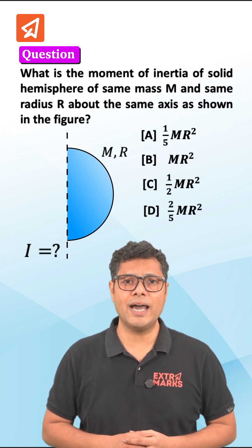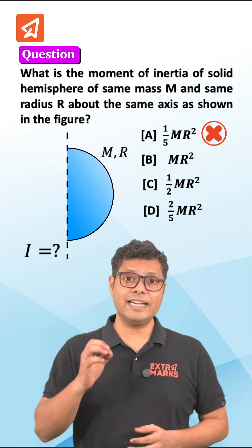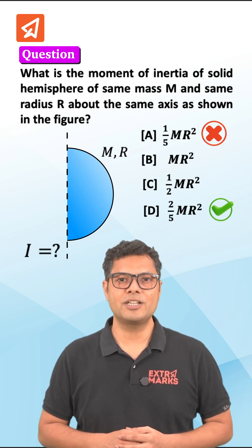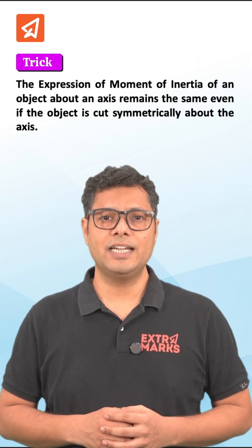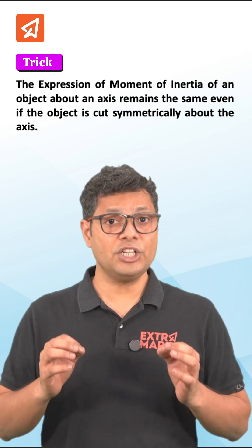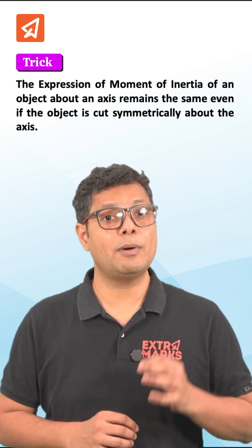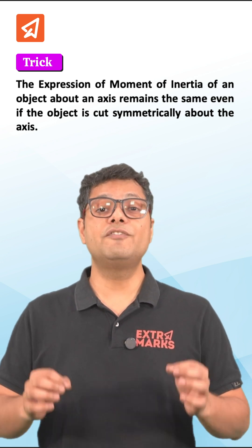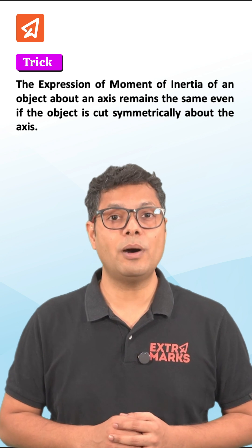If your answer is 1 by 5 m r square, then you are wrong. The correct answer is again 2 by 5 m r square. Here is a trick to that. The trick says that the expression of moment of inertia of an object about an axis remains the same if the object is cut symmetrically about the axis.